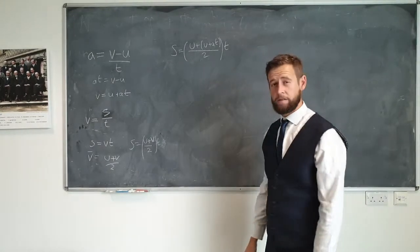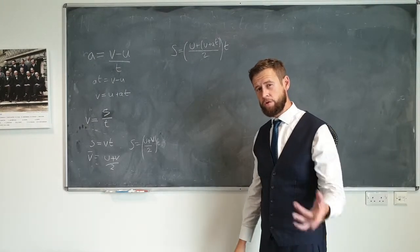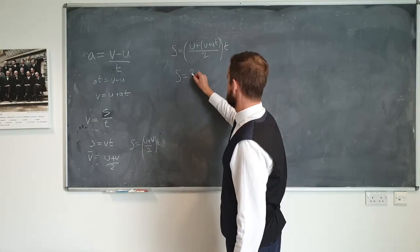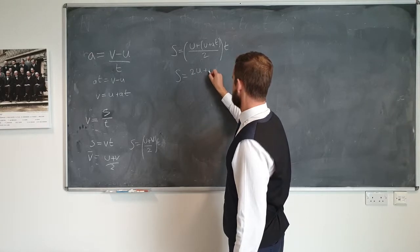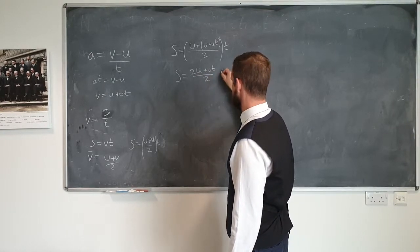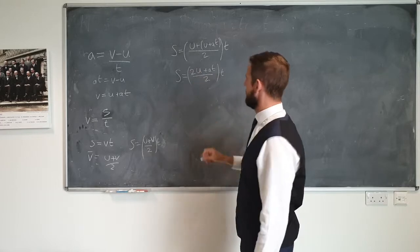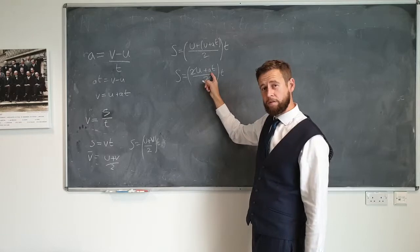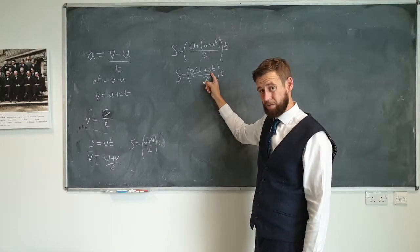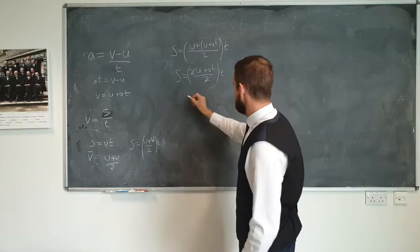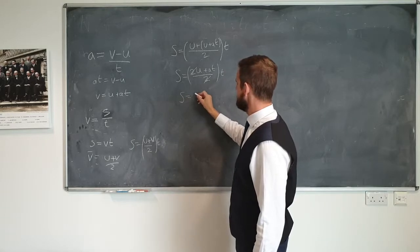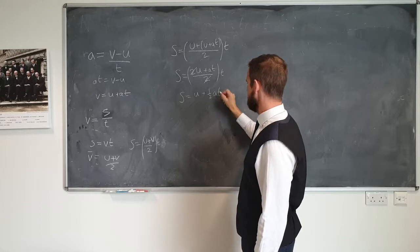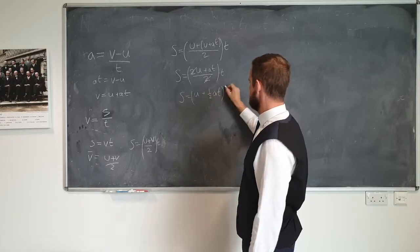The first thing I'm going to do is combine the U terms. We've got U plus U, that's 2U. So we have S equals 2U plus AT divided by 2 times T. We have 2 divided by 2, so that cancels out. But we still have to divide this side by 2. So we end up with the displacement equals U plus half AT times T.